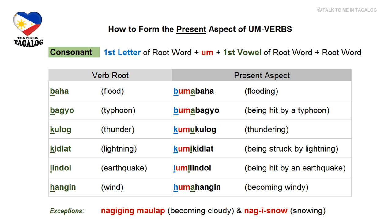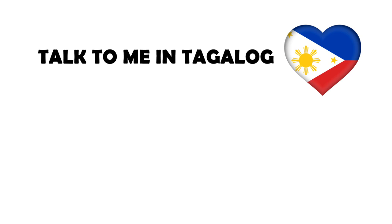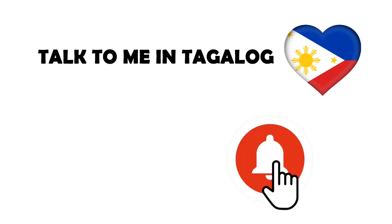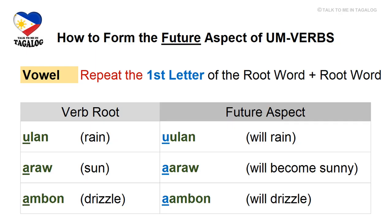Hangin: present aspect is humahangin, meaning 'becoming windy.' There are two acts of nature that are exceptions to these rules — just memorize them. One is nagiging maulap, meaning 'becoming cloudy.' The other is nag-iisnow, meaning 'snowing.' If you're new to this channel, please don't forget to subscribe and hit the bell icon so you'll get notified every time I upload a new lesson.